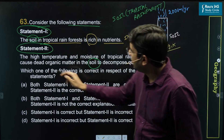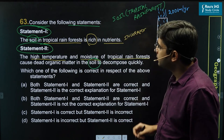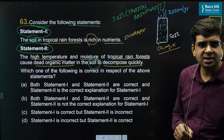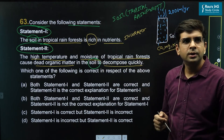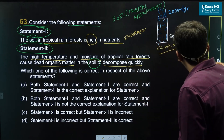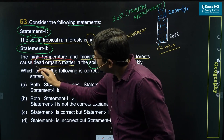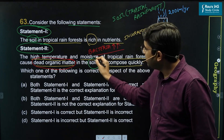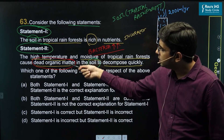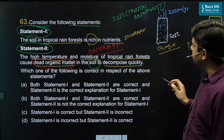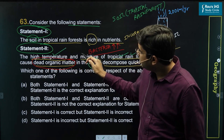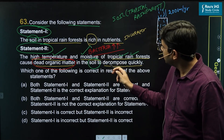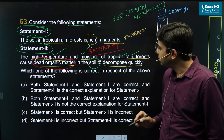Statement 2 says that high temperature and moisture of tropical rainforest causes dead organic matter in the soil to decompose quickly — this is true. Decomposition of dead organic matter requires bacteria. The two factors present in this rainforest area — high temperature and high moisture — flourish bacterial growth enormously, meaning a very high amount of bacteria is present, which causes quick decomposition of dead organic matter. So Statement 2 is correct.